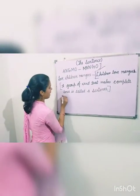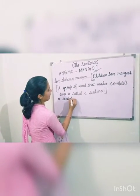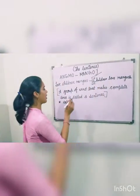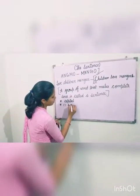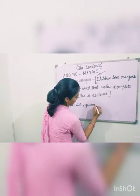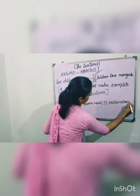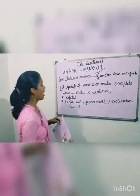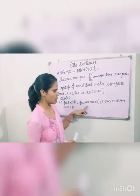Now, first, keep in mind: a sentence always begins with a capital letter. Ha meesha, jo aapka sentence ho ga, wo capital letter se start ho ga. First letter is always capital. And the second point you should keep in mind: a sentence always ends with a full stop. Aapka jo sentence ho ga, wo last mein full stop, ya phir question mark, ya exclamation mark pe khatam ho ga. Our sentences always start with a capital letter and end with a full stop, question mark, or exclamation mark.